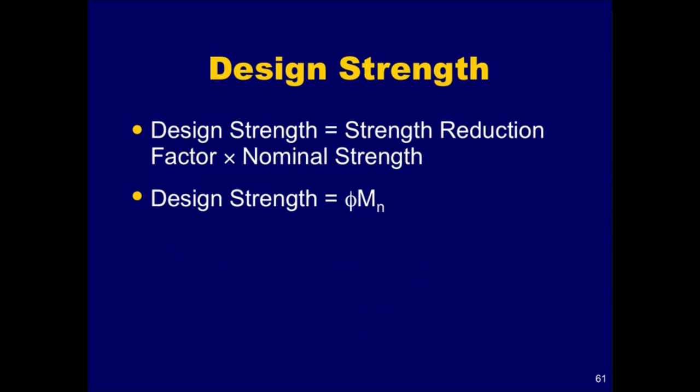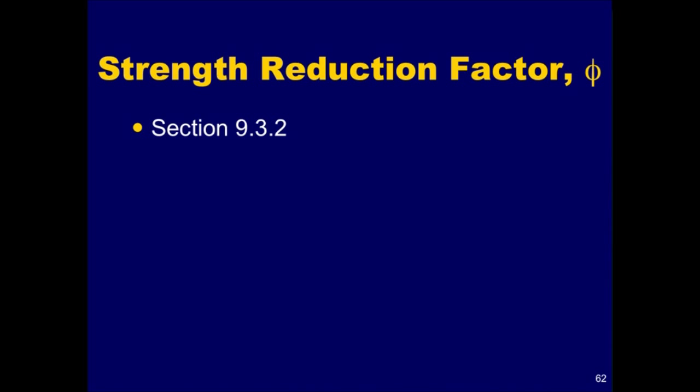Design strength, in general, is equal to the nominal strength of the section multiplied by the strength reduction factor. For flexural design, the design strength is equal to the strength reduction factor phi times the nominal moment strength. We will now examine the requirements on how to determine the phi factor for flexure. The phi factor to use for flexure depends on whether the section is tension-controlled, compression-controlled, or in the transition region.